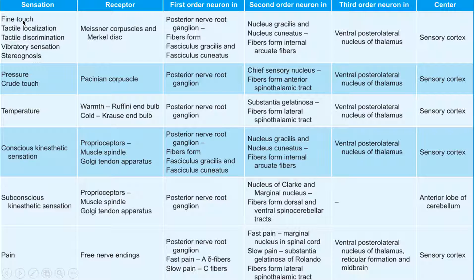On the table, we have fine touch, tactile localization, tactile discrimination, vibration sensation, and stereognosis, which are going to be carried by Meissner's corpuscles and Merkel's discs. The first order neuron is going to be in the posterior nerve root ganglion, and the fibers are going to be forming the fasciculus gracilis and the fasciculus cuneatus. The second order neurons arise from the cuneate nucleus and gracile nucleus, forming internal arcuate fibers that synapse on the ventral posterolateral nucleus of the thalamus, eventually reaching the sensory cortex. The table also covers pressure, crude touch, temperature, conscious and subconscious kinesthetic sensation, as well as pain.